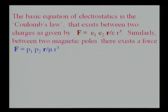The basic equation of electrostatics is Coulomb's law that exists between two charges, as given by F equal to e1 e2 r by epsilon r cubed, which essentially says that this is proportional to 1 by r squared. As most of you know, this law was obtained by Coulomb through experiment, the famous torsion balance experiment.